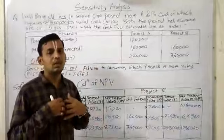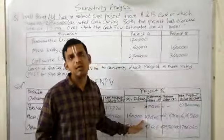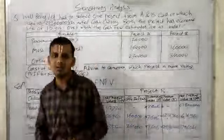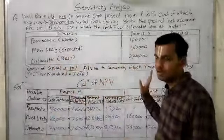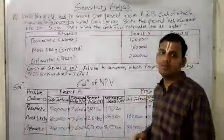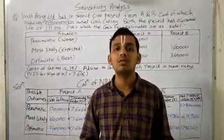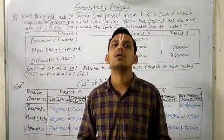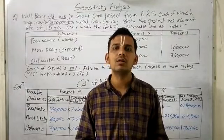If a manager is risk-seeking, definitely he or she will go for Project B. But according to conservative approach and risk analysis, the company should avoid Project B because it is more risky than Project A. Keep watching our YouTube channel. Until then, stay tuned. Thank you.